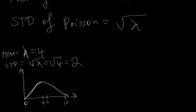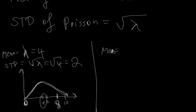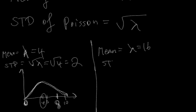We have a mean of 4 and we vary by 2 on either side. Two standard deviations below would put you at 0, and two standard deviations above would put you at around 8. How does this differ from a Poisson distribution where the mean is equal to 16? The standard deviation equals the square root of 16, which equals 4.